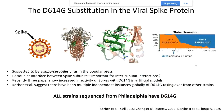The D614G substitution in the viral spike protein has been suggested to be a super-spreader virus by the popular press. This residue is found at the interface between the S1 and S2 subunits of the spike protein, shown here. Recently, three papers have shown that, at least in artificial models, this mutation leads to increased infectivity of virus particles. Korber et al. has recently suggested that in numerous locations around the world, the strain with D614G is actually increasing over time, as shown in the figure. Importantly, all the strains sequenced from Philadelphia have this D614G mutation.